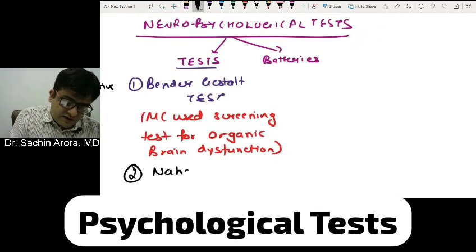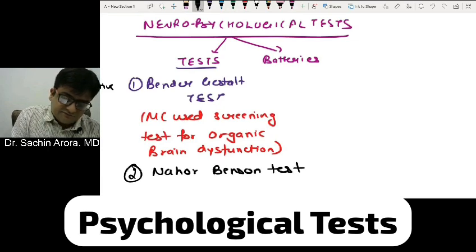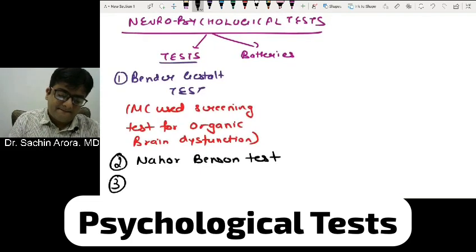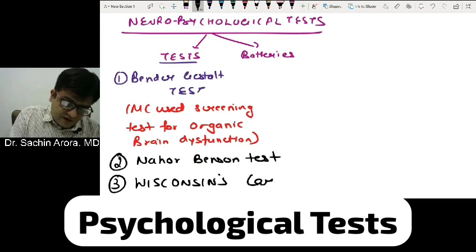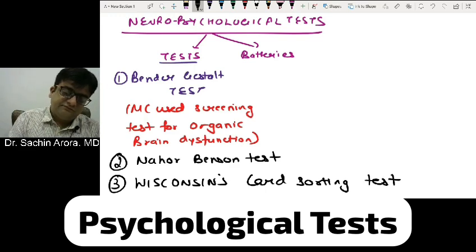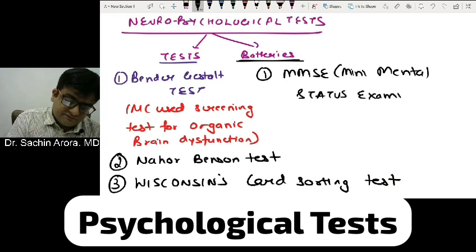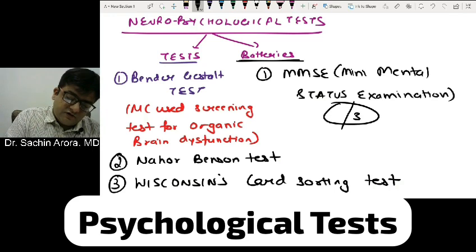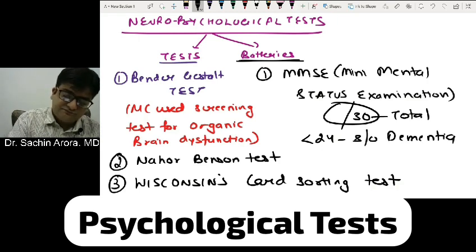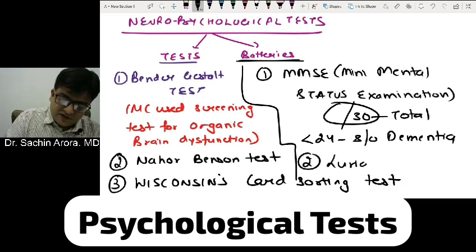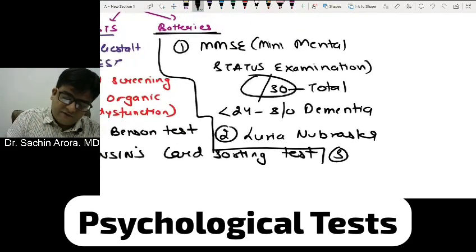Number two is the Nahar Benson test. Number three is the Wisconsin Card Sorting Test. Among batteries, we have MMSE — Mini Mental Status Examination — where a total score out of 30 is given; less than 24 is suggestive of dementia. Likewise, we have the Luria Nebraska battery and the Halstead-Reitan battery.